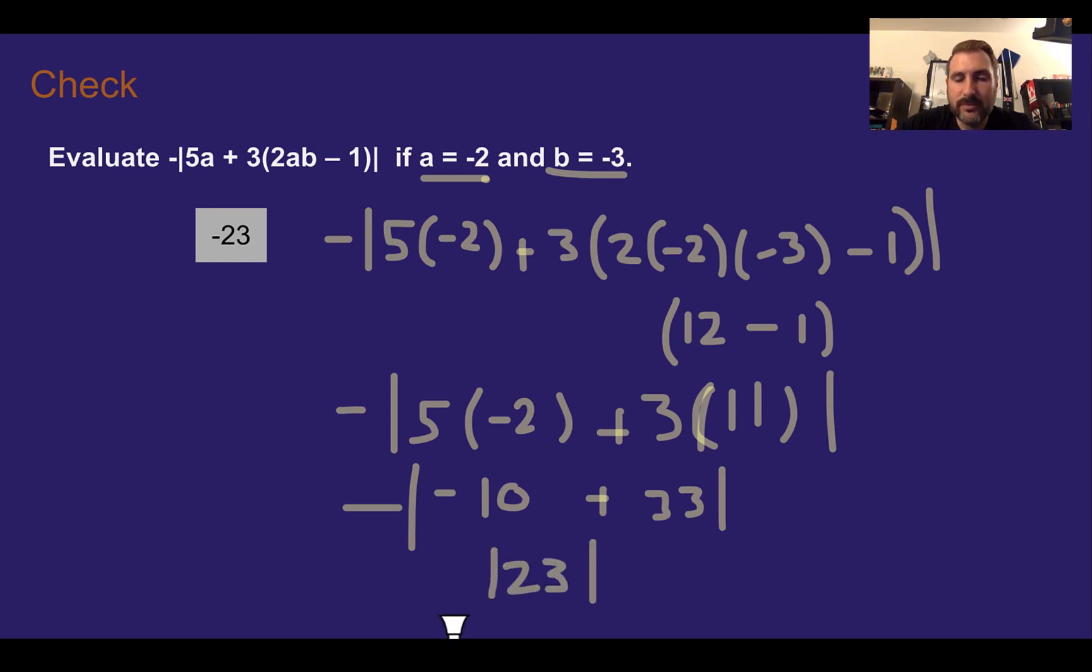The absolute value of 23 is 23. So you might be thinking the answer should be positive 23. However there is a negative sign outside the absolute value. So once we calculate that the absolute value is 23 this is still negative. It's going to make it negative right at the very end. Negative 23.